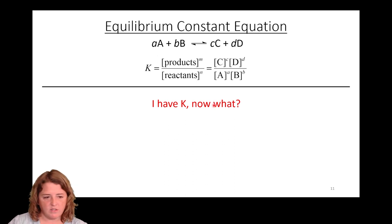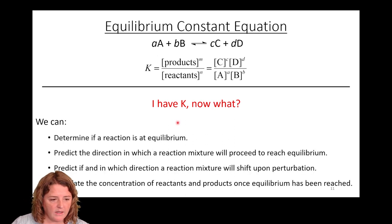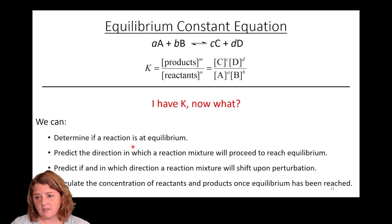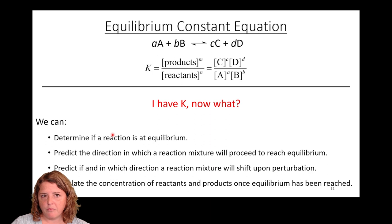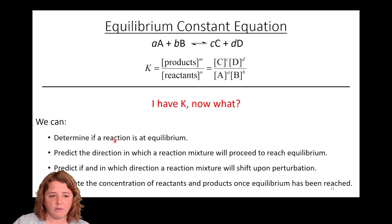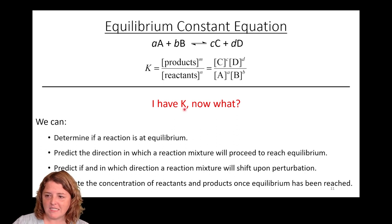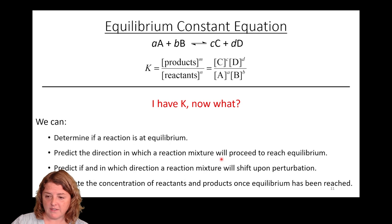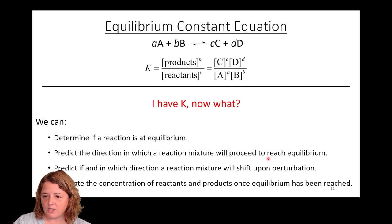Once we know the equilibrium constant, what can we do with it? One thing we can do is determine if a reaction is at equilibrium. If my reaction mixture has a ratio of products over reactants that equals K — the ratio at equilibrium — then I'm at equilibrium. Another thing we can do is predict what the reaction will do if it's not at equilibrium in an effort to get there. All reactions want to reach equilibrium.